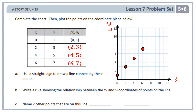Now let's go back to the problems. We have drawn all the points we need. Number 1A says use a straight edge to draw a line connecting these points. If you don't have a ruler at home, remember you can use the edge of a book, the edge of a phone, anything that can help you draw a straight line. Let's go to B: write a rule showing the relationship between the x and y coordinates of points on the line. This concept — writing a rule — is a little bit tricky. We start to think about our algebraic thinking, or algebraic concepts.